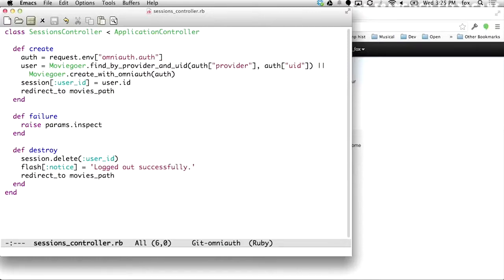and I am using the provider and UID fields, which again, how do you know this? You read the Twitter documentation. I'm going to use the provider and UID fields. UID is what came from Twitter. Provider is what I told OmniAuth I was using. So, if I already have a user, in other words, if I recognize who this is,